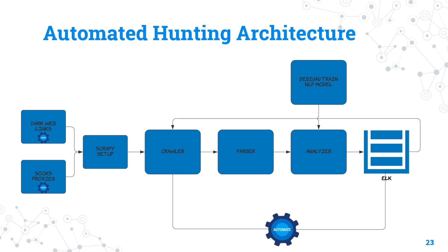This is the automated architecture. The steps that can be automated include getting forum links and market links — you can write a simple script to gather data from search engines like Recon. Getting SOCKS proxy IPs can also be automated with a simple script. The Scrapy setup part is harder to automate: you write login functions, set up proxy configurations, and manage Scrapy settings. When you get new onion forum links, you have to manually log into the forums and sign in — creating four to five accounts per forum and noting usernames, passwords, and cookies in Scrapy.